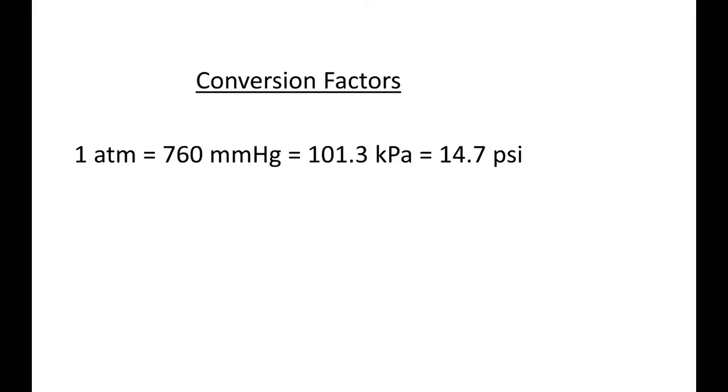Conversion factors: one atmosphere is equal to 760 millimeters of mercury, which is also equal to 101.3 kPa, which is also equal to 14.7 psi, which is also equal to 760 torr. All of these are equal to each other. So depending on what two units you're looking at in a pressure conversion, you use one of these five.